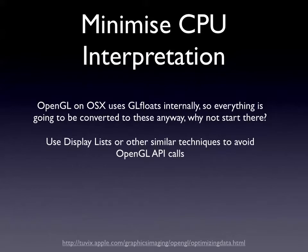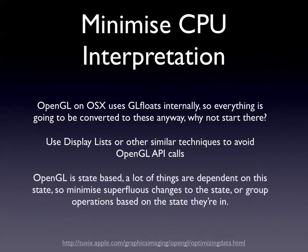Use display lists and other similar technologies to avoid OpenGL API calls. OpenGL is state-based and a lot of things are dependent on that state. So minimize the number of state changes — the number of pushing and popping of matrices and basically anything that changes the internal state of OpenGL. Group all similar operations together, and if you're working on a hierarchy of matrices, try to minimize the number of pop and push calls by grouping things together in order to minimize the state changes.